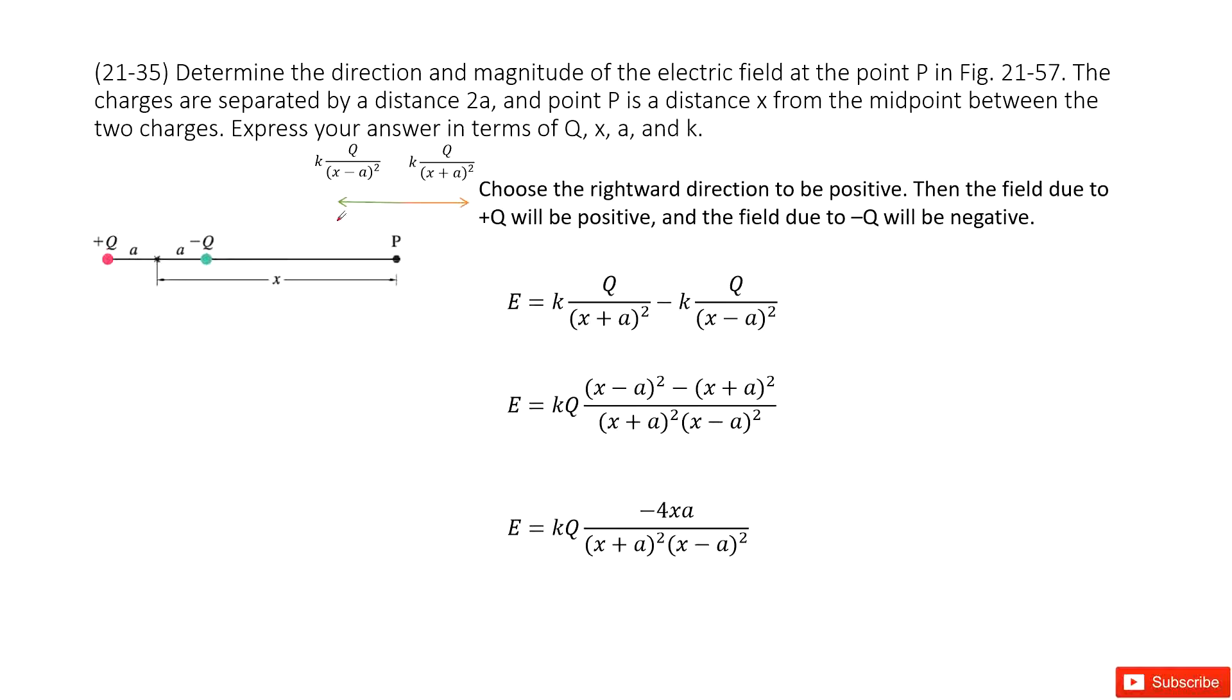Welcome to my channel. I am Zhang Jingxu. Let's look at problem 35 in chapter 21. Chapter 21 is about electric charge and electric field. So we need to determine the direction and magnitude for the electric field at position P.